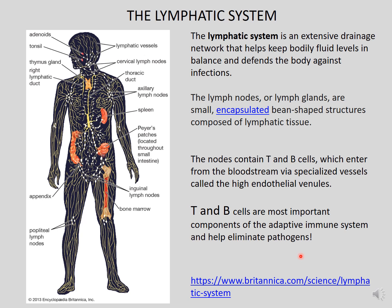T cells are named because they are derived from a structure called the thymus. B cells were originally discovered in birds from the bursa of Fabricius, but one way to remember it is that B cells are also derived from the bone marrow, so B can stand for bone marrow. To summarize, T and B cells are significant components of the adaptive immune system and help eliminate pathogens.